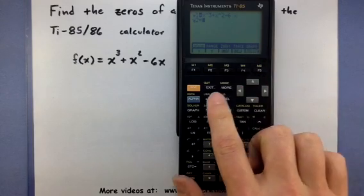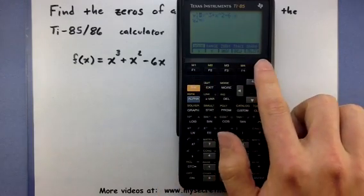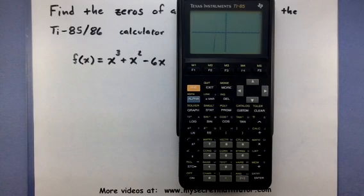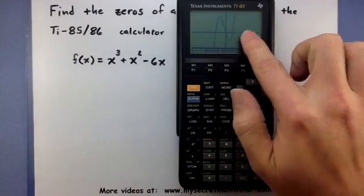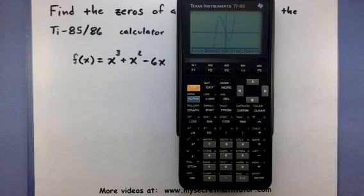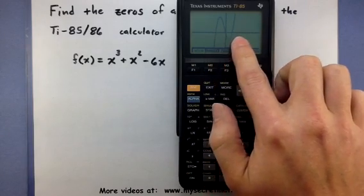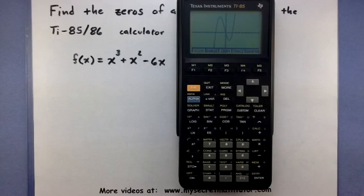Let's go to the graph. You can do that by pressing second f5. We've got a nice picture of our graph, and it looks like it has about three zeros. One looks like somewhere around negative three, one at zero, and one around two.